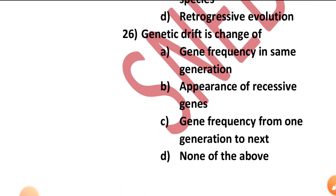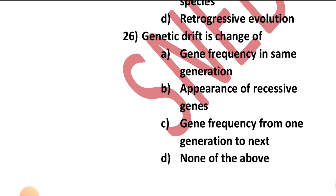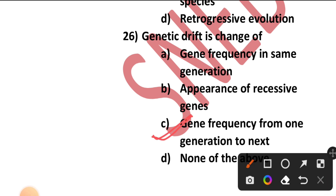Question number twenty-six: Genetic drift is the change of — gene frequency in the same region, gene frequency in the same generation, appearance of recessive genes, or gene frequency from one generation to the next? It is the change of gene frequency from one generation to the next generation.